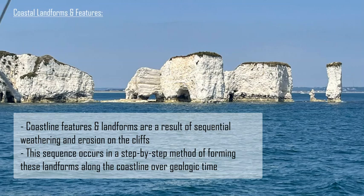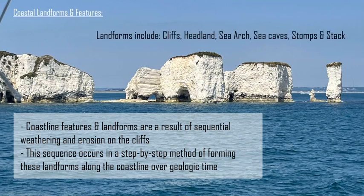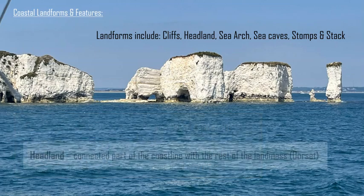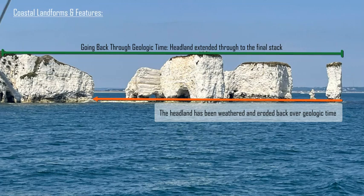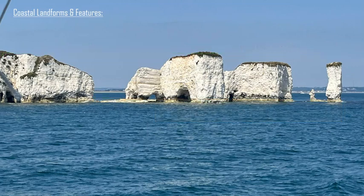From this one image, we can look at a progressional system and sequence of events that happens along coastlines — this is showing a timeline of what happened to create the current situation. In this image, we have a stump, stacks, a sea arch, multiple sea caves, and a headland on the left. If we go back in time and rewind the geologic clock, the headland originally extended across this entire image from left to right, all formed from the same chalk rock, and over time it has been broken down through weathering and erosion.